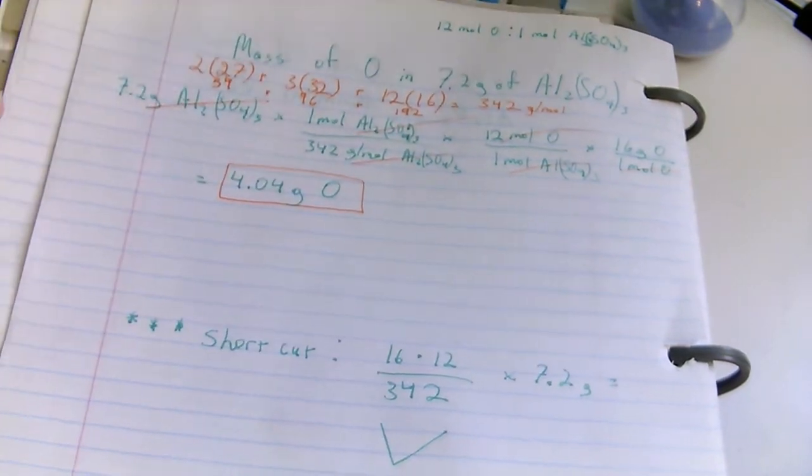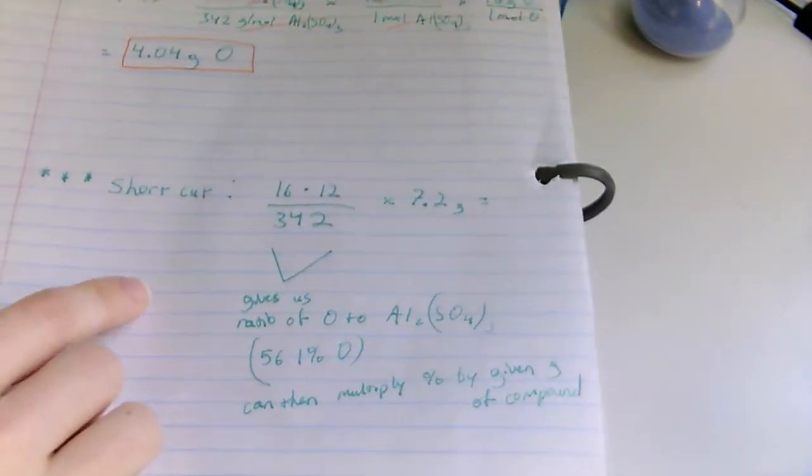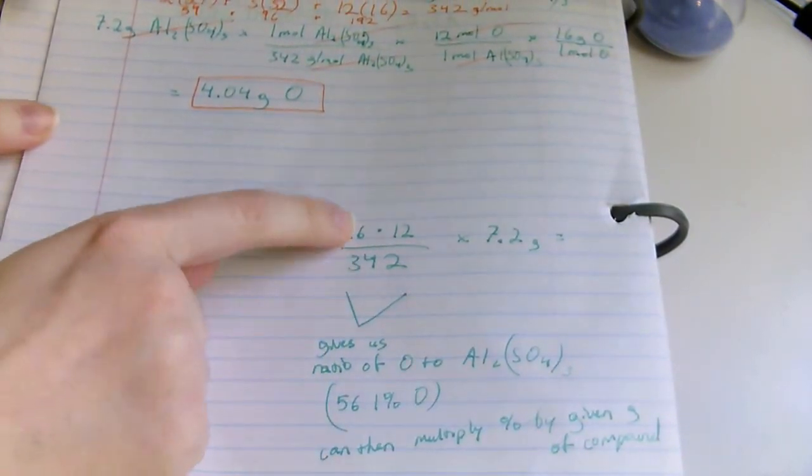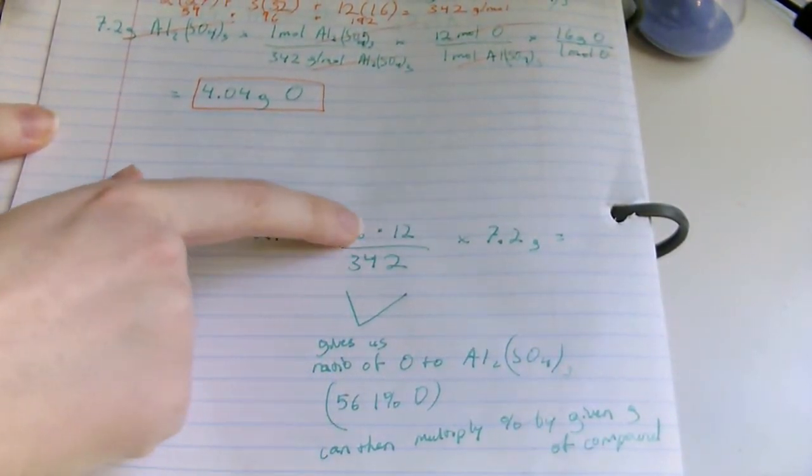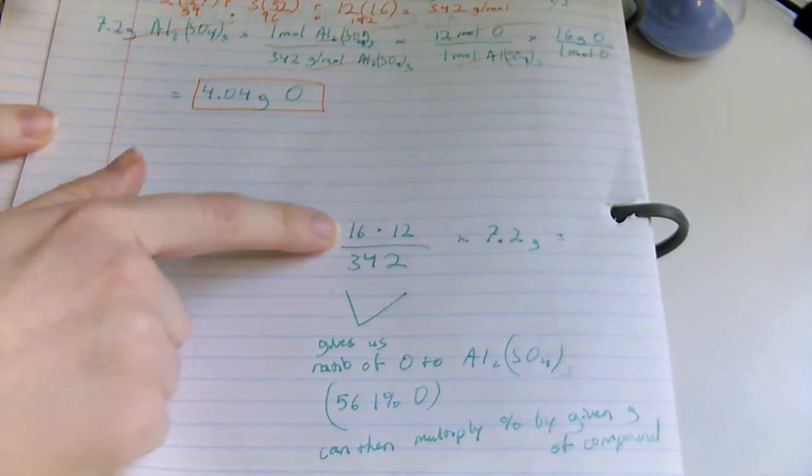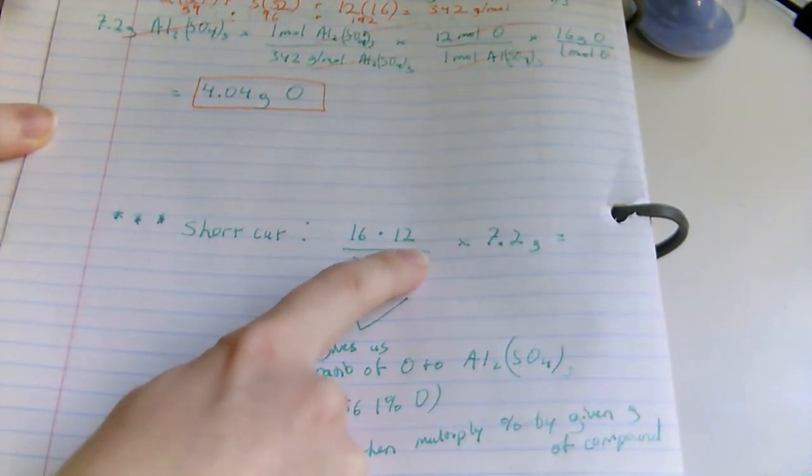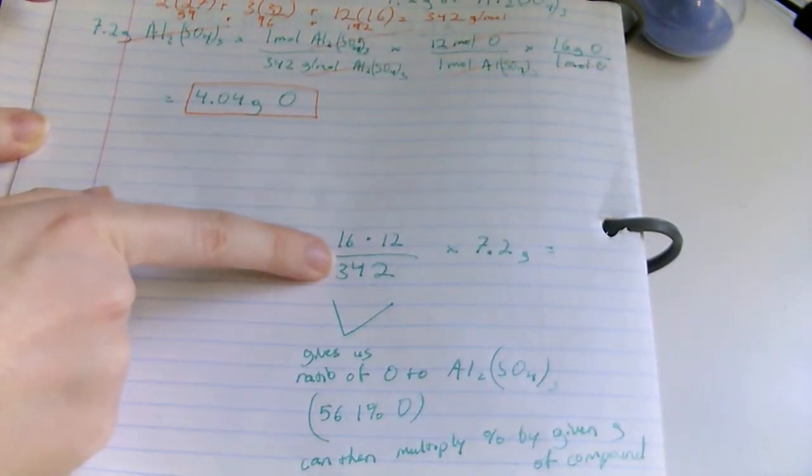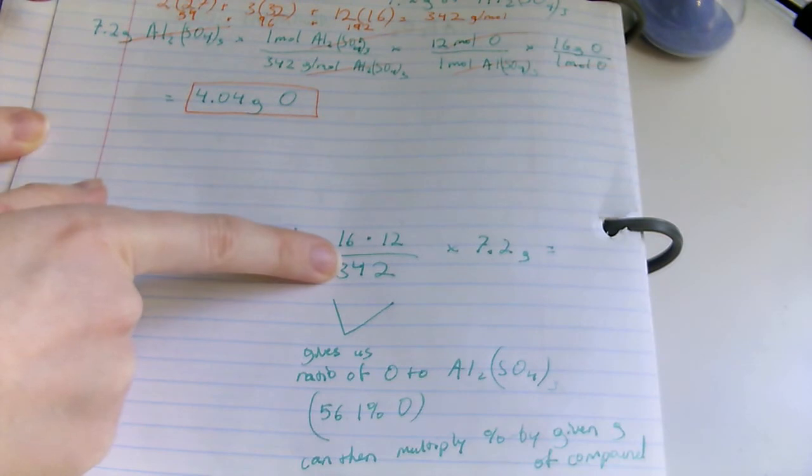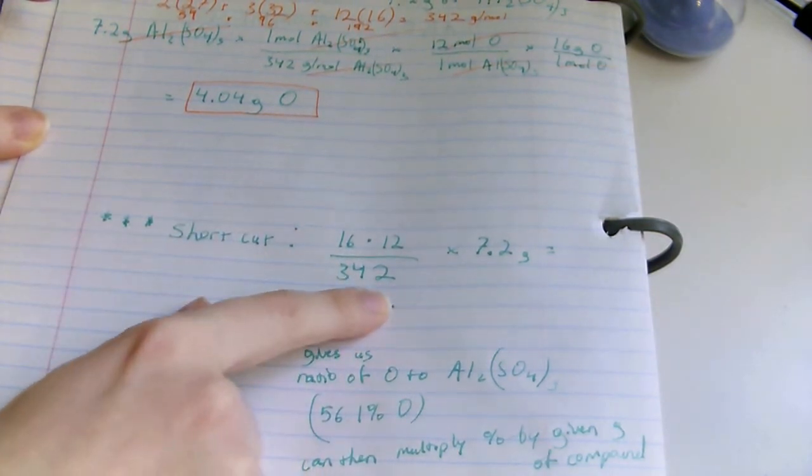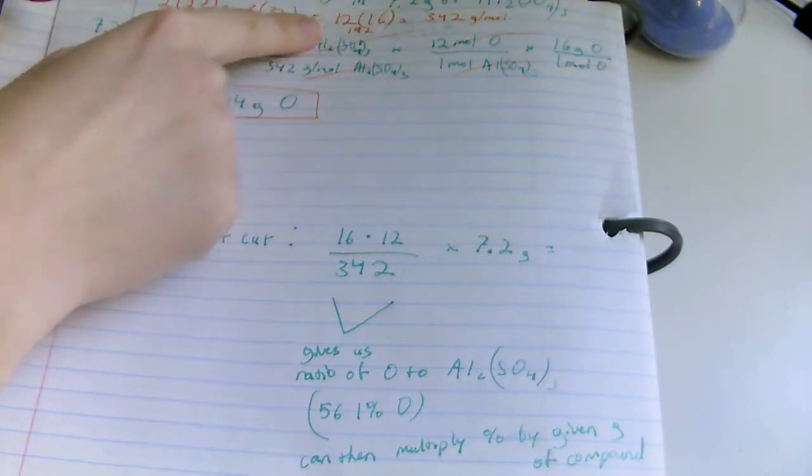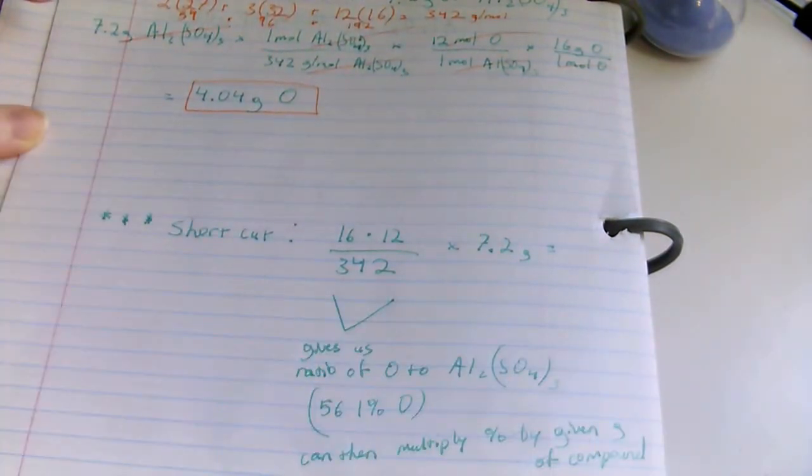Okay, now for the shortcut. It's really straightforward and the same kind of work. You're multiplying 16 by 12, basically the gram of oxygen or whatever element you're given, times the number of moles there are in the whole thing, which in our case is 12. You divide this by the mass of the whole compound, 342 in our case, and then multiply that by the given mass of the whole thing that they gave us, 7.2 grams here.